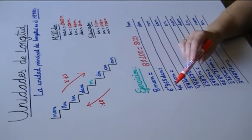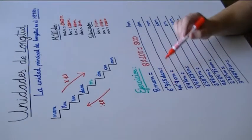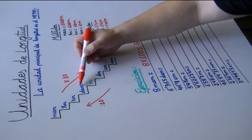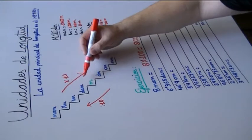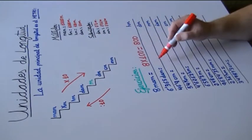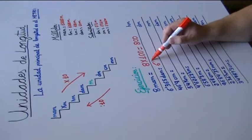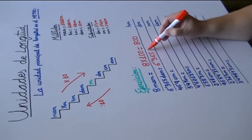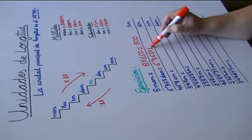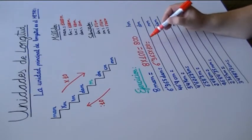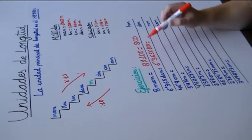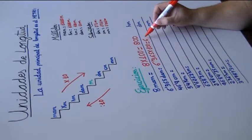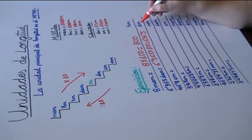Será igual a 800 hectómetros. Continuamos. 6,365 decámetros a decímetros. De decámetro a decímetro, el metro sería 1 y el decímetro 2: dos escalones que tenemos que bajar. Pues 6,365 por 100. Desplazamos la coma hacia la derecha dos cifras: 636,5 decímetros.